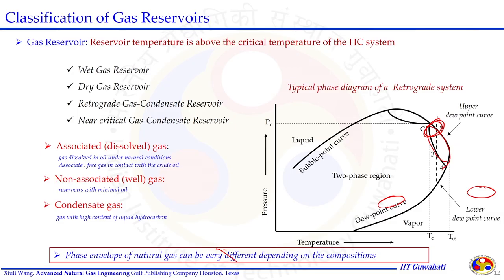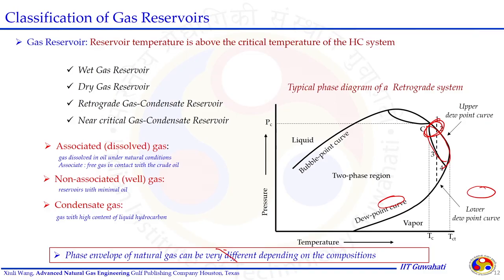Some other important terms: associated gas is gas dissolved in oil at natural reservoir conditions — this gas becomes free when the reservoir is brought to the surface and emits out from the oil. Non-associated gas is gas present at reservoir condition where minimal oil is there and mostly gas is produced to the surface. Condensate gas is gas with high content of liquid hydrocarbons present, and we produce condensate gas at the surface.